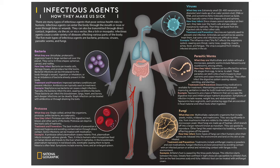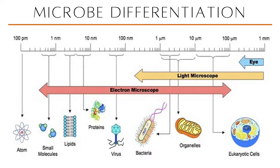You have a separate subject for bacteria and a separate one for parasites, and now you have virology to discuss viruses. You can differentiate microbes just by their mere size and how they can be visualized using different imaging techniques. Eukaryotic cells can be visualized by the naked eye or with a light microscope. Bacteria can also be visualized by light microscope; however, viruses cannot — they can only be visualized by electron microscope.